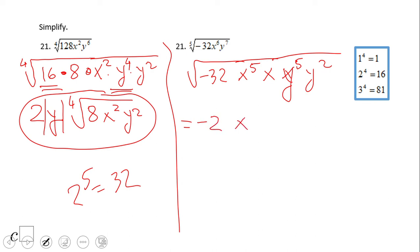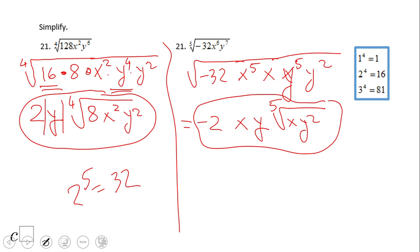If you ended up with the answer −2xy · ⁵√(xy²), then you did a wonderful job. There is no need for absolute value since this is a fifth root. If you enjoyed this math video clip, don't forget to click the like button and come back on C Squared for more math video clips. Thank you.